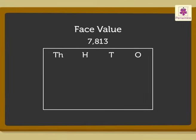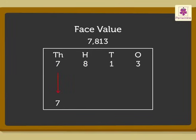As you already know, digit 7 is placed in the thousands column, digit 8 is placed in the hundreds column, digit 1 in the tens column, digit 3 in the ones column. But the face value of a digit is the same as the digit itself, irrespective of where it comes in the place value chart. So, the face value of digit 7 is 7, the face value of digit 8 is 8, the face value of digit 1 is 1, and the face value of digit 3 is 3.